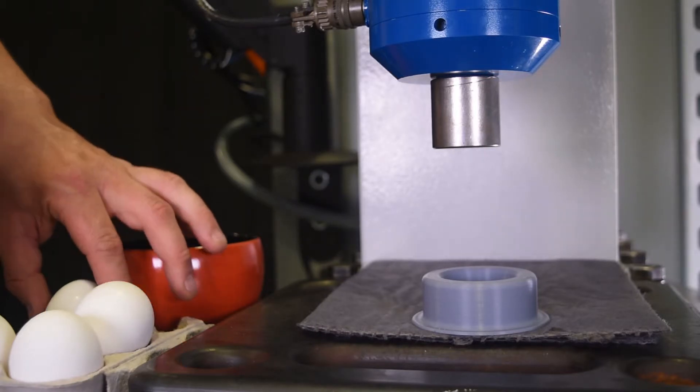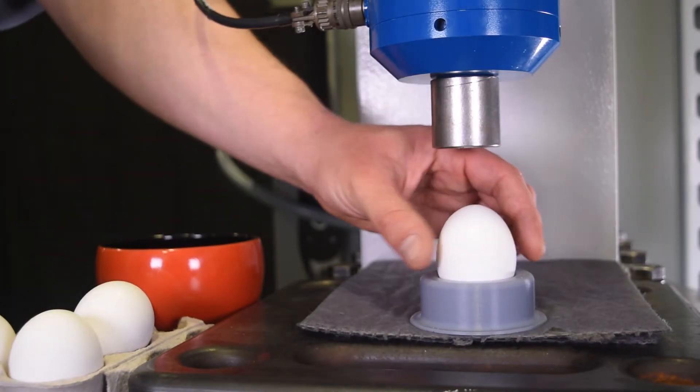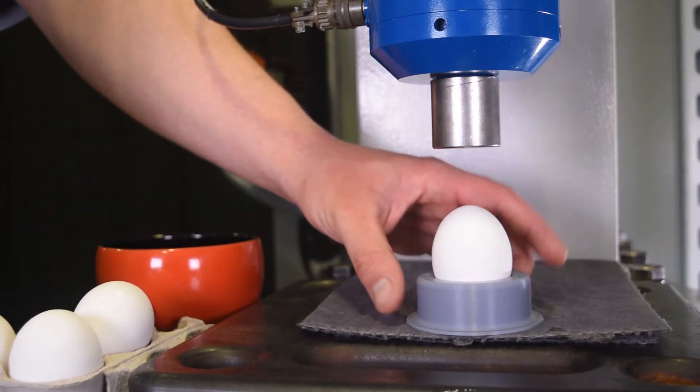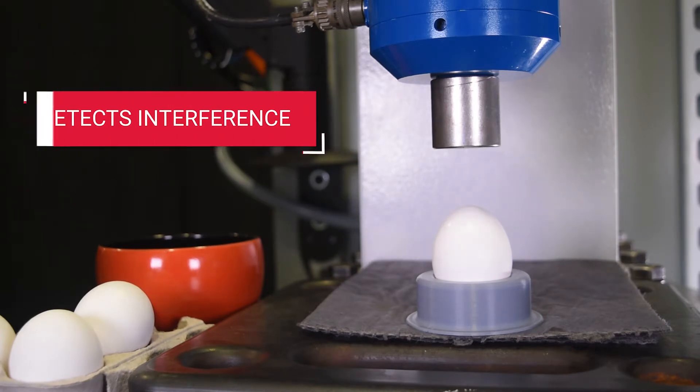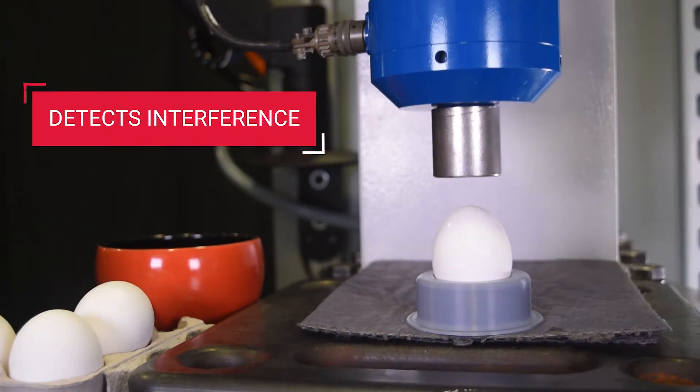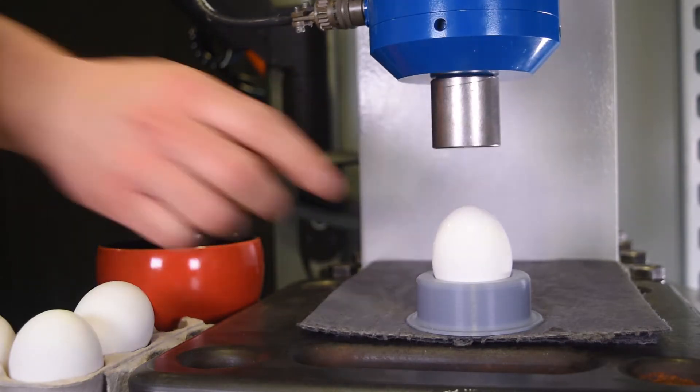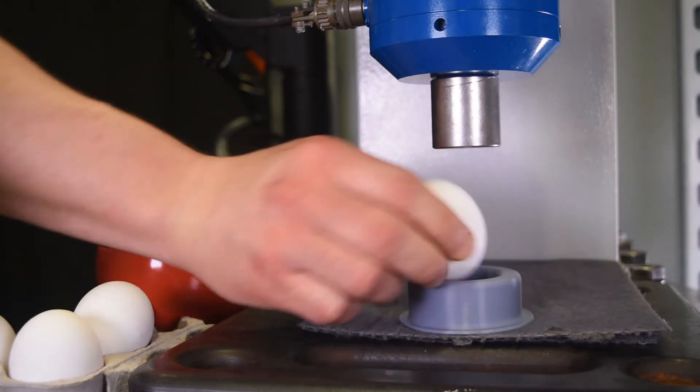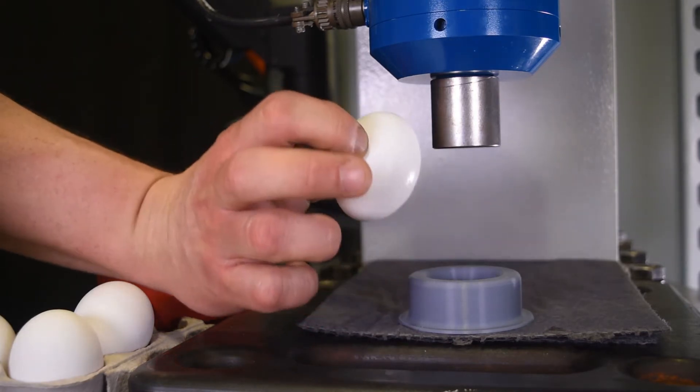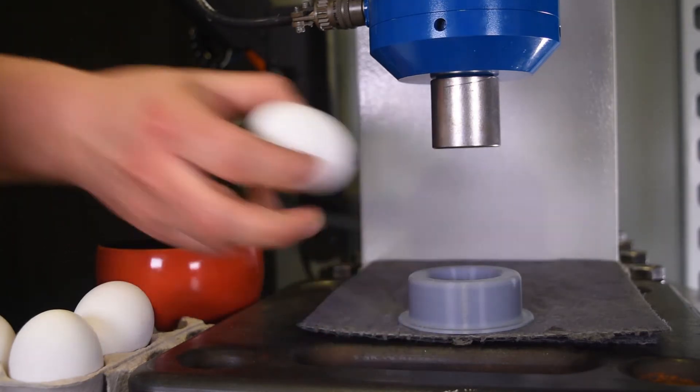The Evo press line also has a built-in quality check or go no-go functionality. Say that in an assembly application you're targeting a position of X, the press will actually watch to make sure that you do hit your position. If the press did not achieve any of the variables that you programmed in, the press will then notify the operator that the part is no good, tell them why, and the operator can act on that intelligence and correct that moving forward.